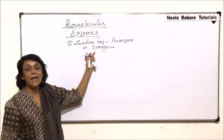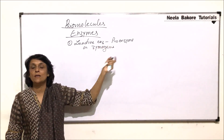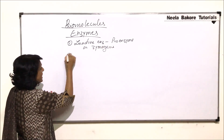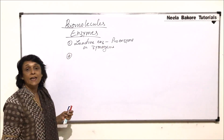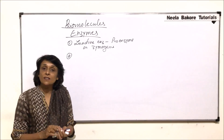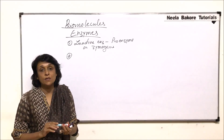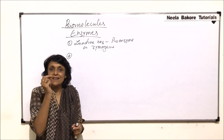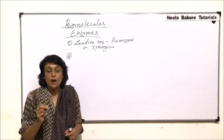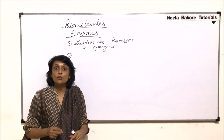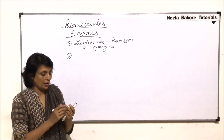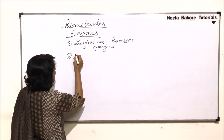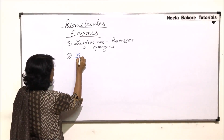Such inactive enzymes are known as pro-enzymes or zymogens. The second important thing is there are certain enzymes or molecules which have a slightly different molecular structure but act on the same reaction. These are called isoenzymes or isozymes.